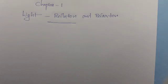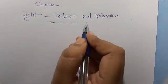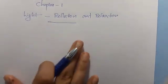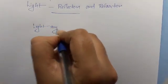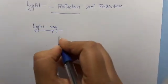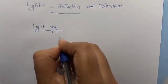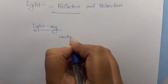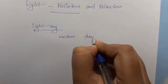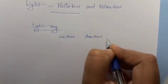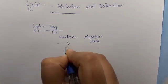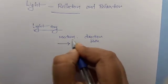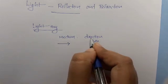CBC class trending: physics chapter one, Light Reflection and Refraction. First, what is a light ray? A light ray is a line that shows the direction in which light travels. A ray of light represents the direction of light propagation, shown by a line with an arrow indicating the path of light.